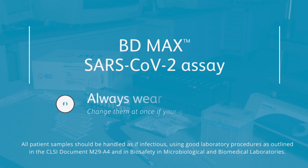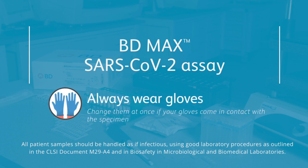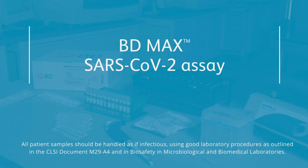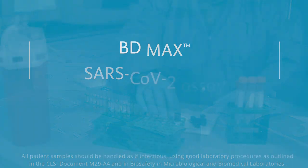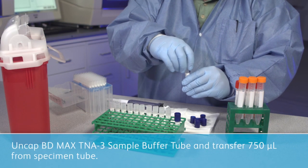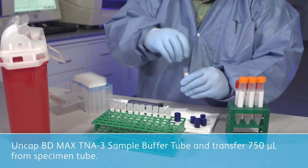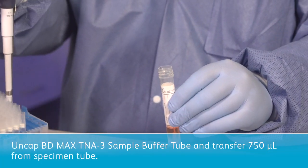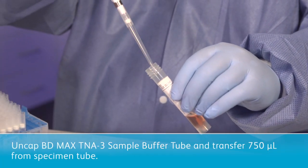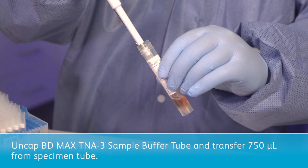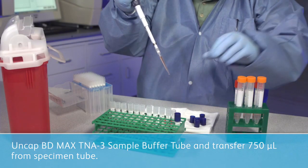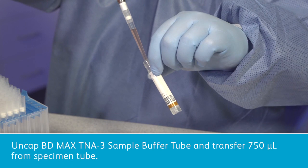As before, always wear gloves when handling specimens and change them at once if your gloves come in contact with a specimen. It's also important to allow frozen specimens to reach room temperature before proceeding. First, uncap the BD-Max TNA-3 sample buffer tube and transfer using a calibrated variable pipette 750 microliters from the UVT or UTM or saline specimen directly into the BD-Max TNA-3 sample buffer tube.